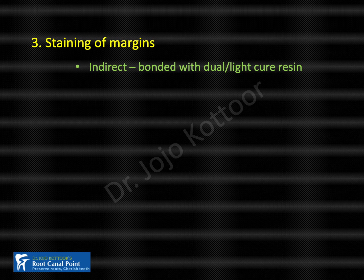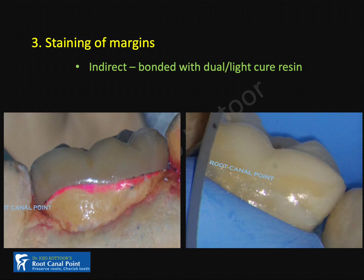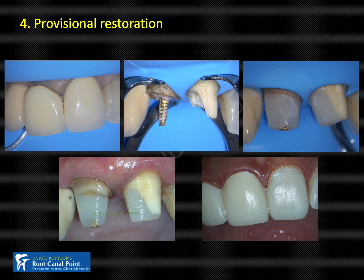The third clinical significance is staining of the margin. This is more applicable in indirect restorations where we use light-cure, dual-cure, or resin cement to bond the indirect restoration to the tooth. It is important to place glycerin gel over the margin before light curing, as this will help prevent the oxygen inhibitor layer at the margin and avoid potential discoloration of the margin over time.